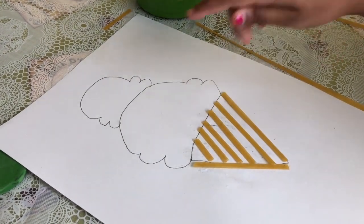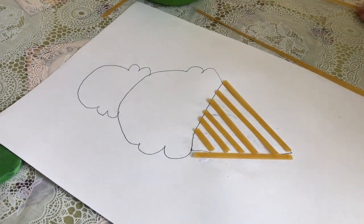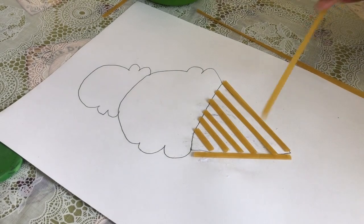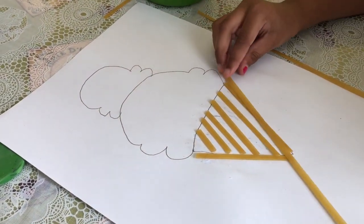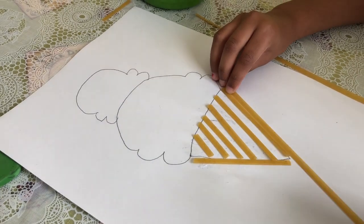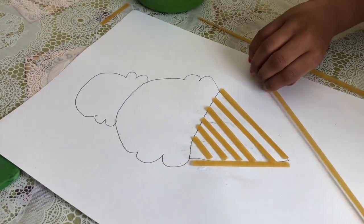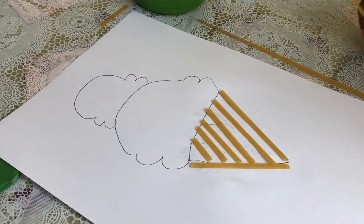And so how we did it, we took one pasta and we went like this. So I'm going to go from the top and like this and crack the edge. So we're going to do that to the other side so we can make the cone.